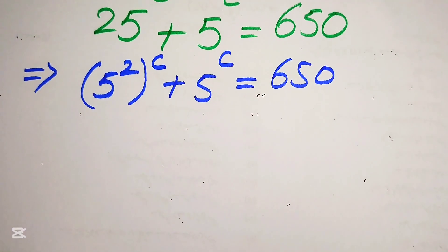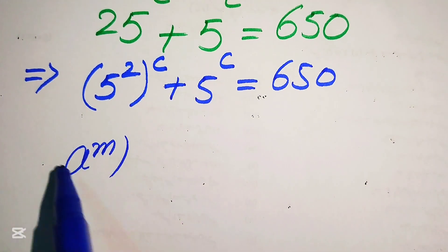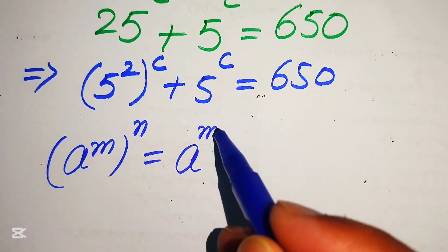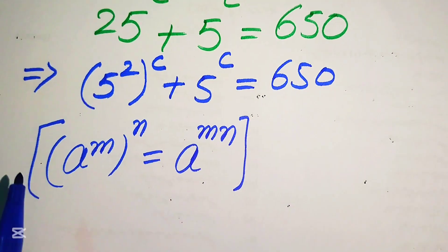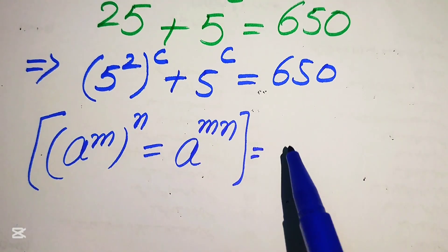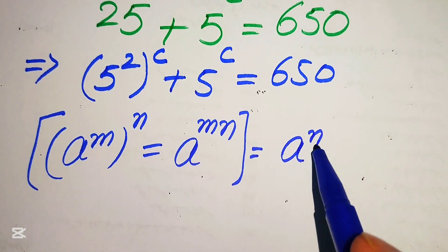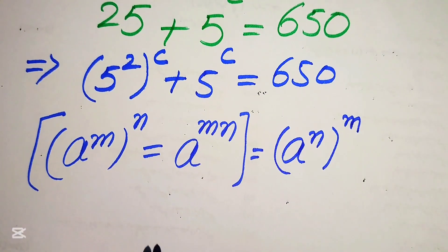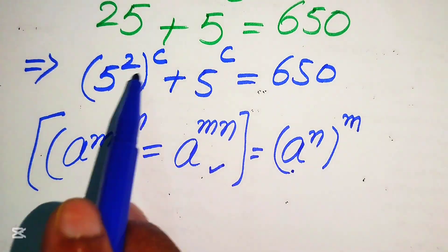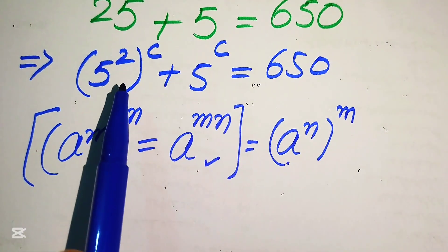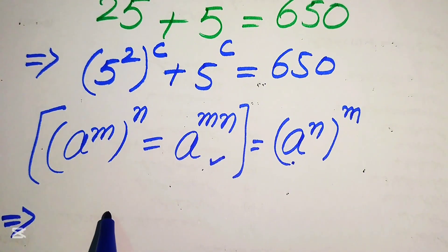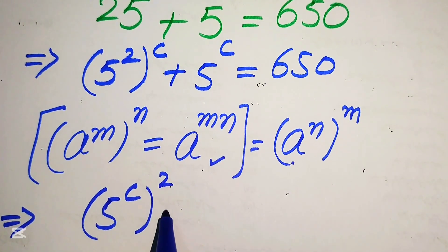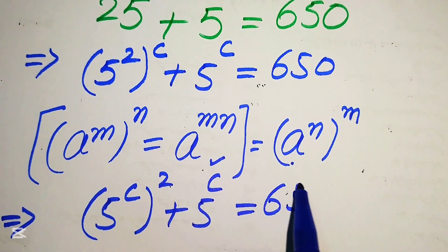In the next step we apply the exponent law: a to the power of m, to the power of n, equals a to the power of m times n. We can also interchange the two exponents. Here we move C inside and the square outside, rewriting it as (5^C) squared plus 5 to the power of C equals 650.